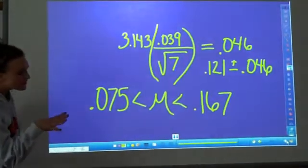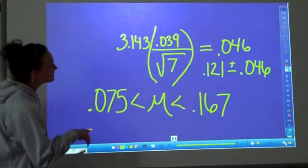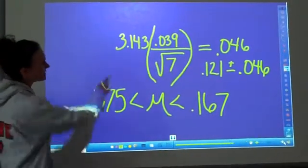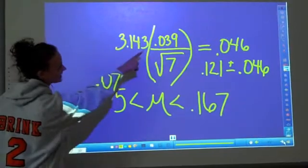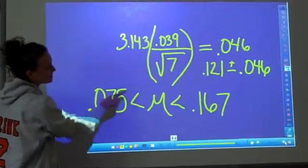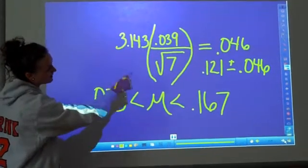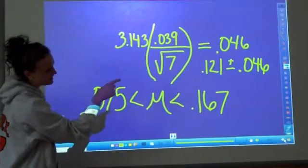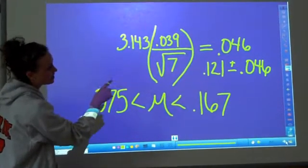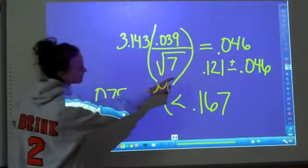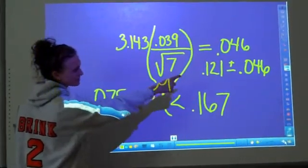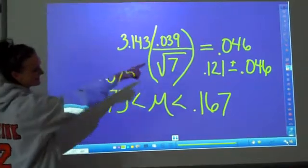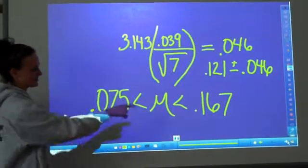And then to work through this, you put your T-score, and then on the top is your standard deviation over the square root of your N. In parentheses, you put that in your calculator, it gives you .046, and then you get your mean plus or minus your answer, and then it gives you both of those.